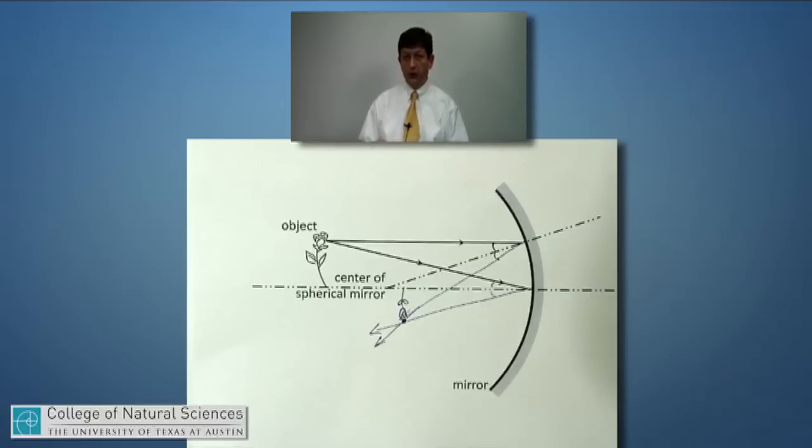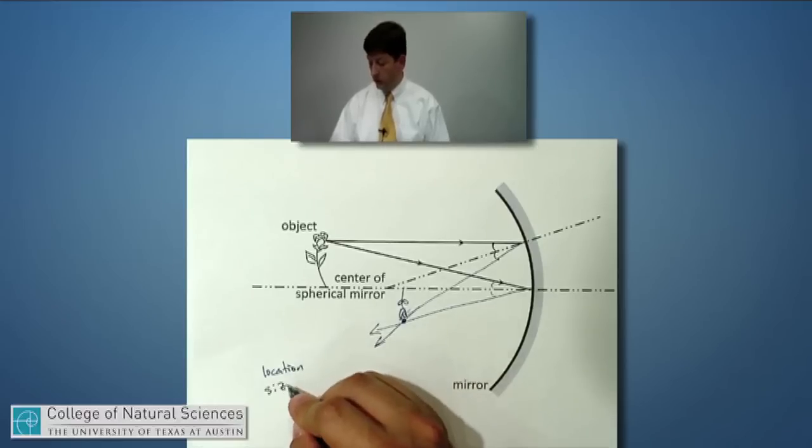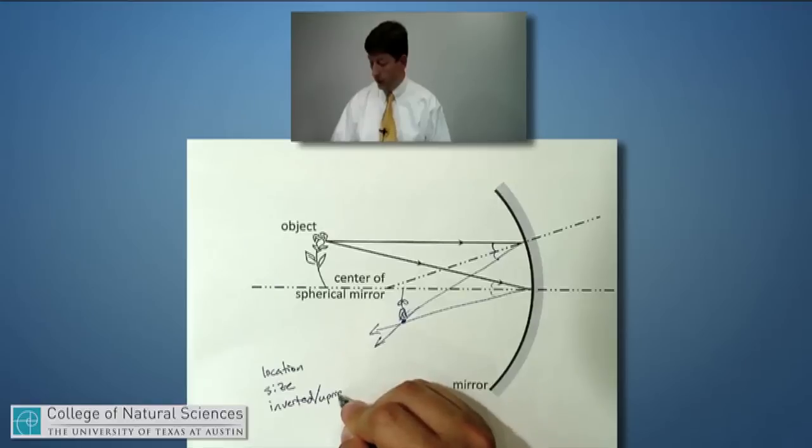We'll see, in general, three properties change: the location of the image, the size, and whether or not it's inverted or upright. I guess we could call that the orientation.